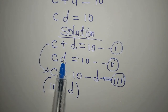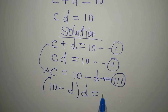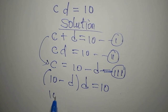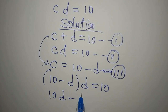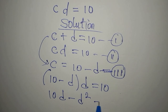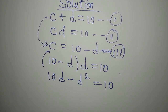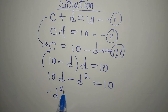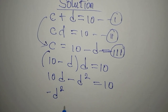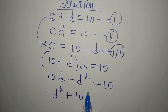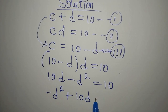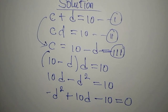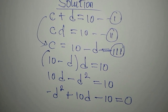In place of c, we write 10 minus d, then multiply by d, and set equal to 10. So d times 10 gives 10d, minus d times d gives d squared, and this equals 10. Rewriting with d squared first: negative d squared plus 10d minus 10 equals zero.